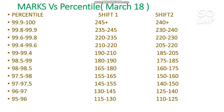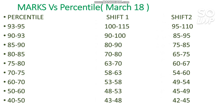For 98 to 98.5 percentile you need to score 165 to 180. For 97.5 to 98 you need to score 155 to 165. For 97 to 97.5 it is 145 to 155, and for 96 to 97 it is 134 to 145. For 95 to 96 you need to score 115 to 134. For 93 to 95 it is 100 to 115, for 90 to 93 it is 90 to 100 marks, for 85 to 90 it is 80 to 90 marks, and for 80 to 85 it is 70 to 80 marks.